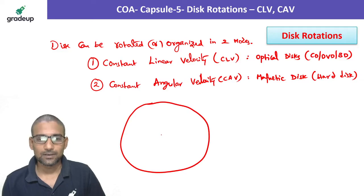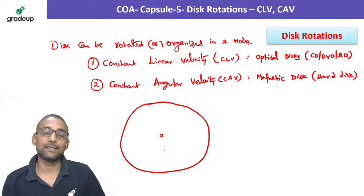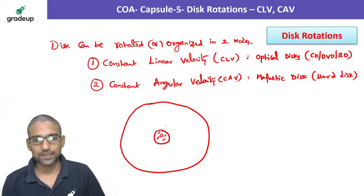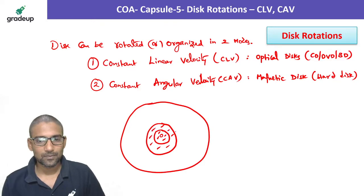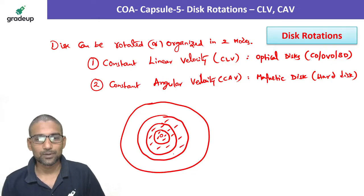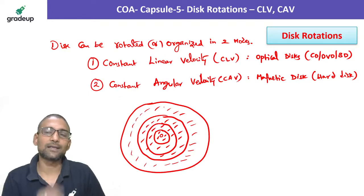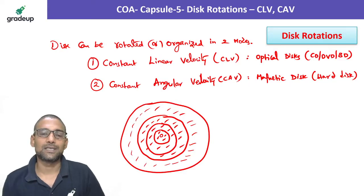Consider the surface of a platter mounted over a spindle. In Constant Linear Velocity (CLV), the innermost track will have fewer sectors, the next track will have more sectors, the track after that even more, and so on. The number of sectors increases as we move outward.